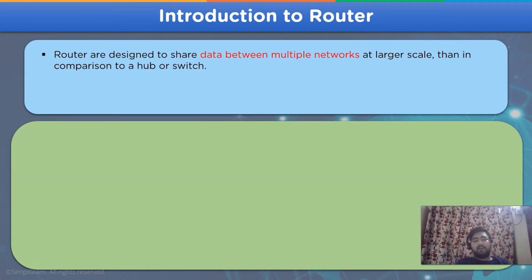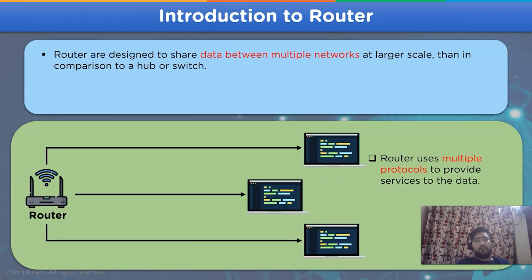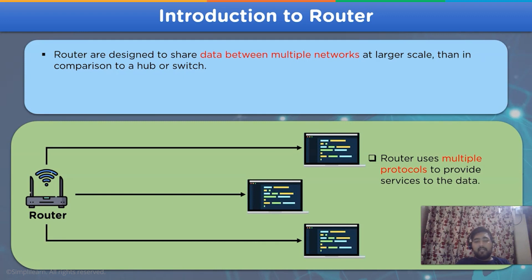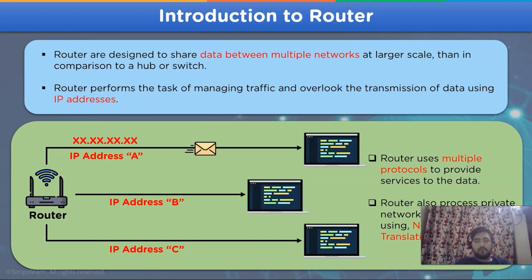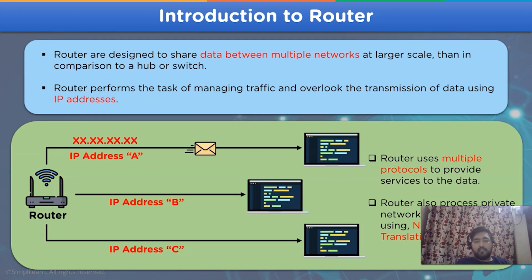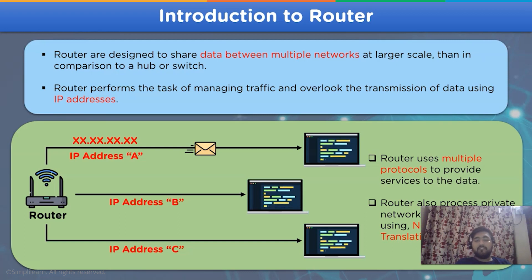A network router is a device designed to share data between multiple networks at a much larger scale in comparison to a hub or a network switch. It is connected to multiple devices at a very large level, which can be considered a metropolitan area network or a wide area network. Routers use IP addresses to share data with a specified device in the network channel, and they also perform the task of translating an address available in a private network to a globally recognized network so that it can access the internet.